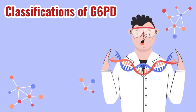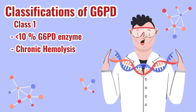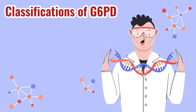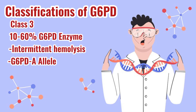Moving on to the classifications of this deficiency — patients with this disorder have their enzyme produced at lower levels. We have 5 classifications. Class 1 are those with less than 10% of the normal G6PD enzyme and suffer from chronic hemolysis, or the continuous destruction of red blood cells. Class 2 also has less than 10% of normal enzyme, but unlike Class 1, Class 2 have intermittent hemolysis — meaning not all the time do they suffer from red blood cell destruction. Class 3, with 10–60% of the normal enzyme and intermittent hemolysis, carries the G6PDA allele.